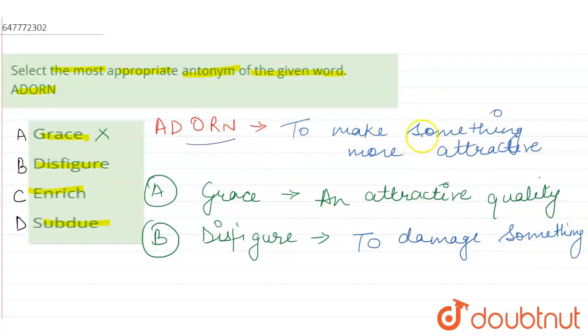Adorn means to make something more attractive, opposite is to damage something. So B option, disfigure, is the correct option.